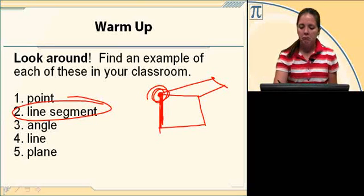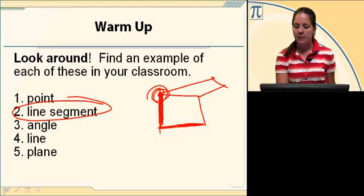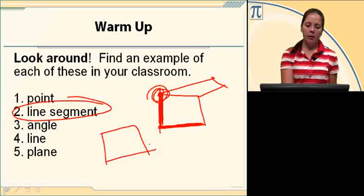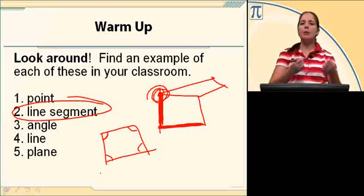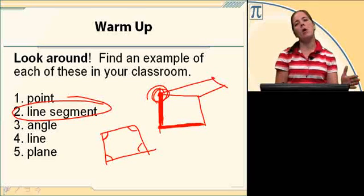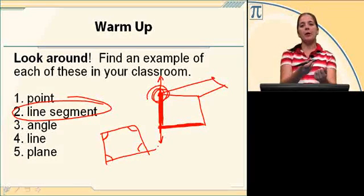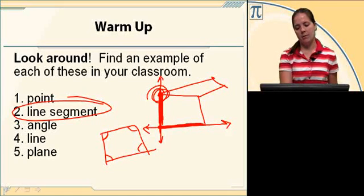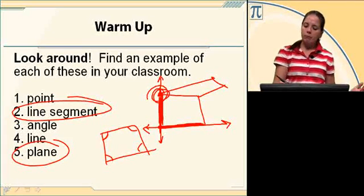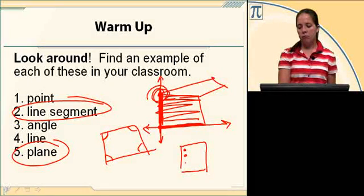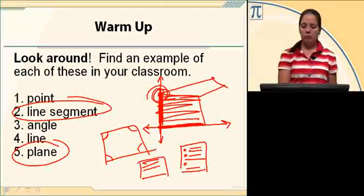Line segment: in that corner all the way along where the walls meet, that's a line segment. Along the floor, the baseboard, that's a line segment. Angle: maybe you're looking at your computer screen seeing these four angles on that screen. Line: a line continues indefinitely in two directions, and so if you imagine where those two walls meet, if you imagine that continuing up through the ceiling and down through the floor, that's an example of a line. Or imagine that baseboard continuing through those corners, through the walls — that's an example of a line. Plane: that wall, that's a plane. A piece of paper, that's a plane. A flat surface is an example of a plane. Your desk, that's a plane.